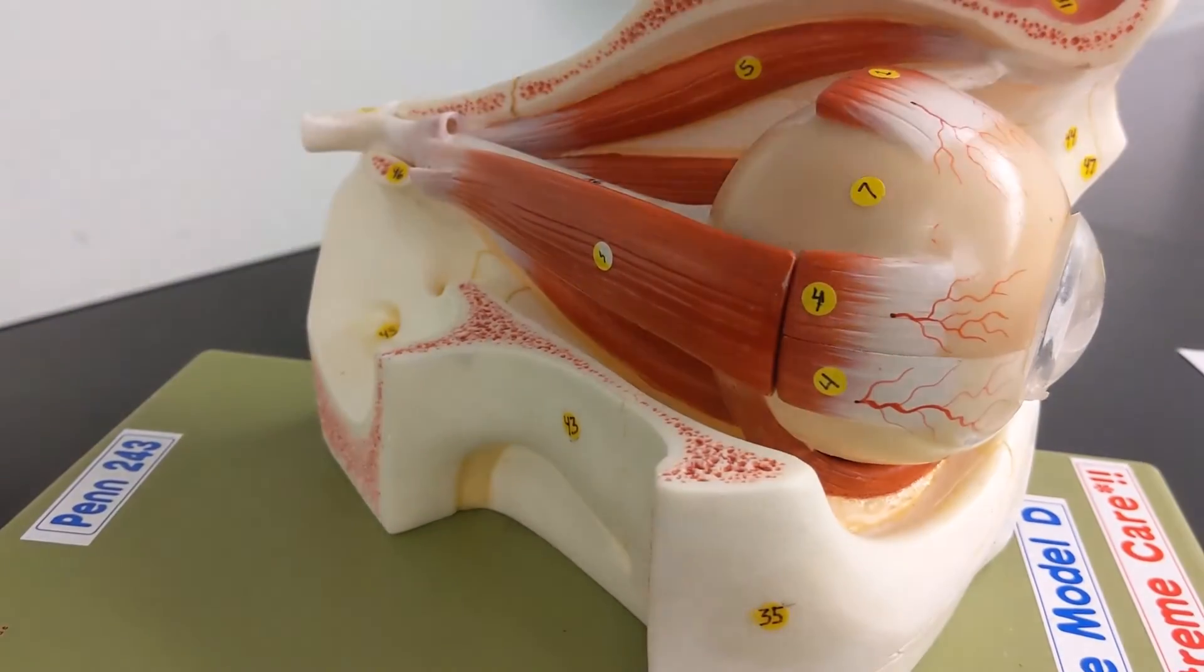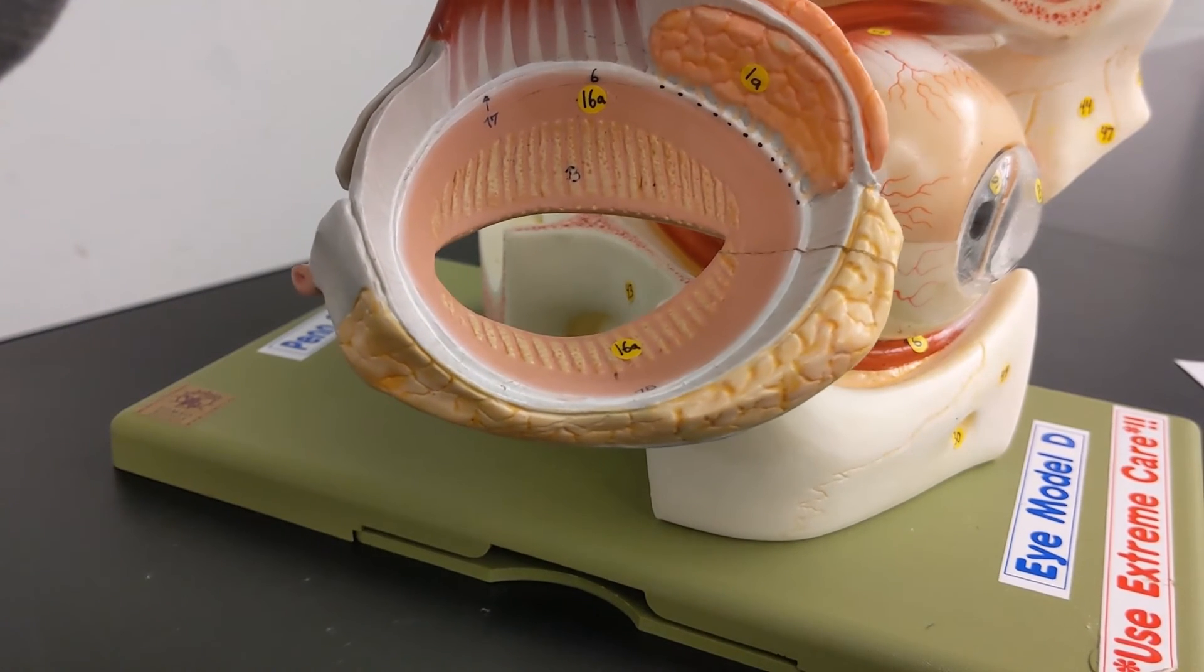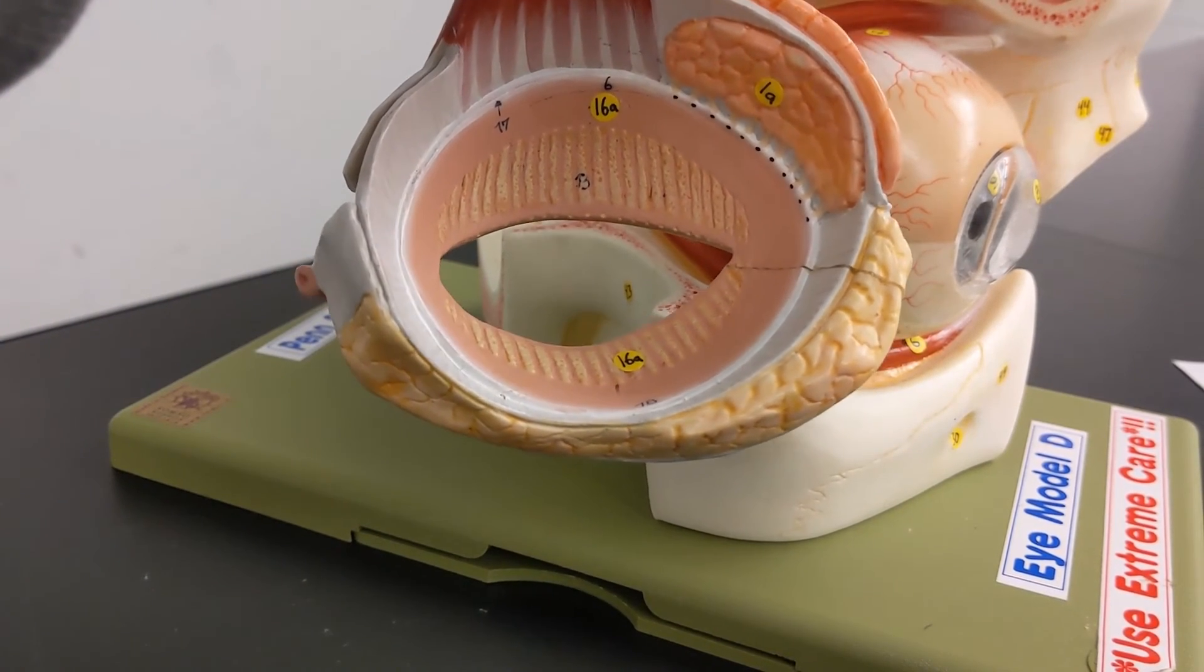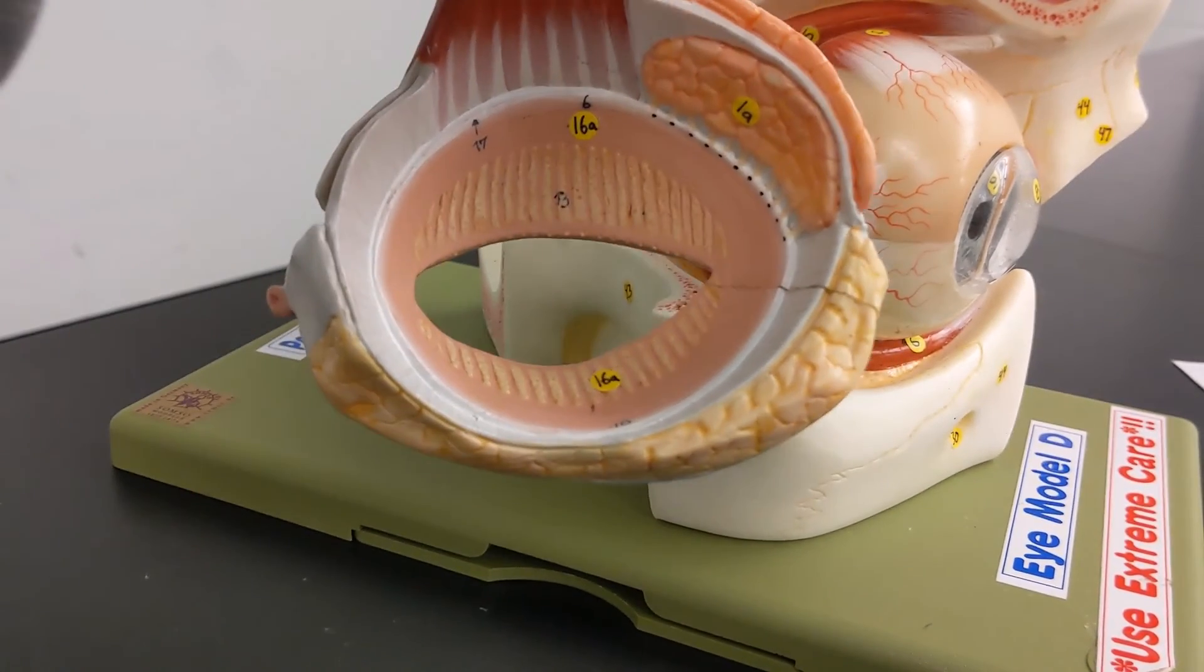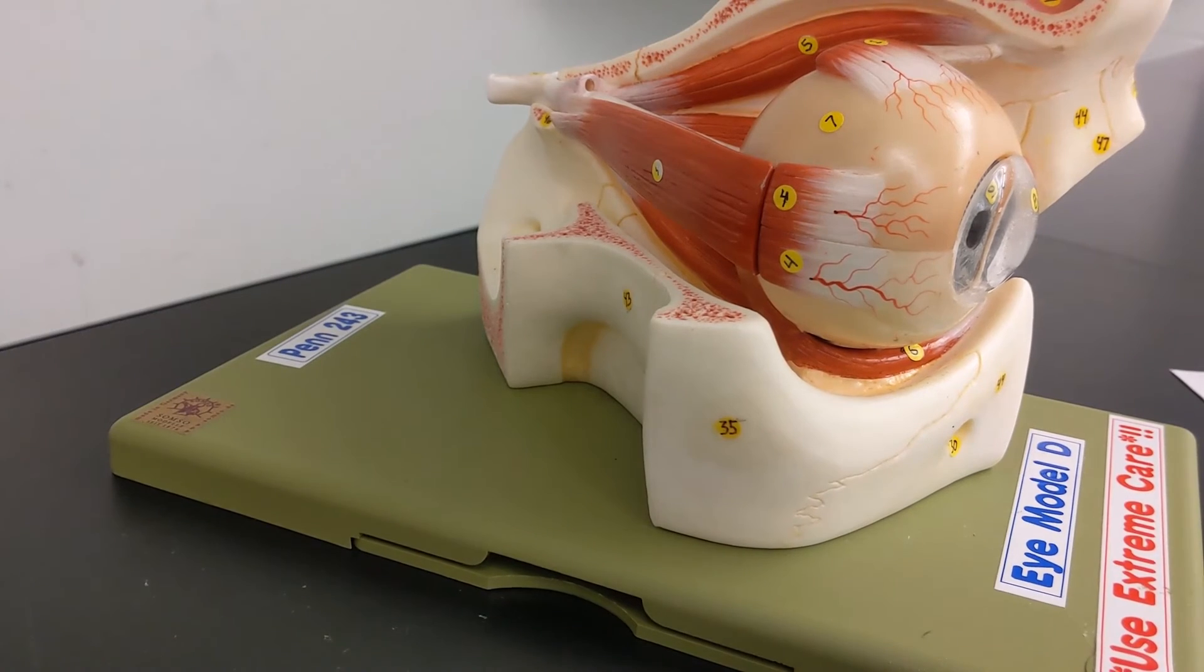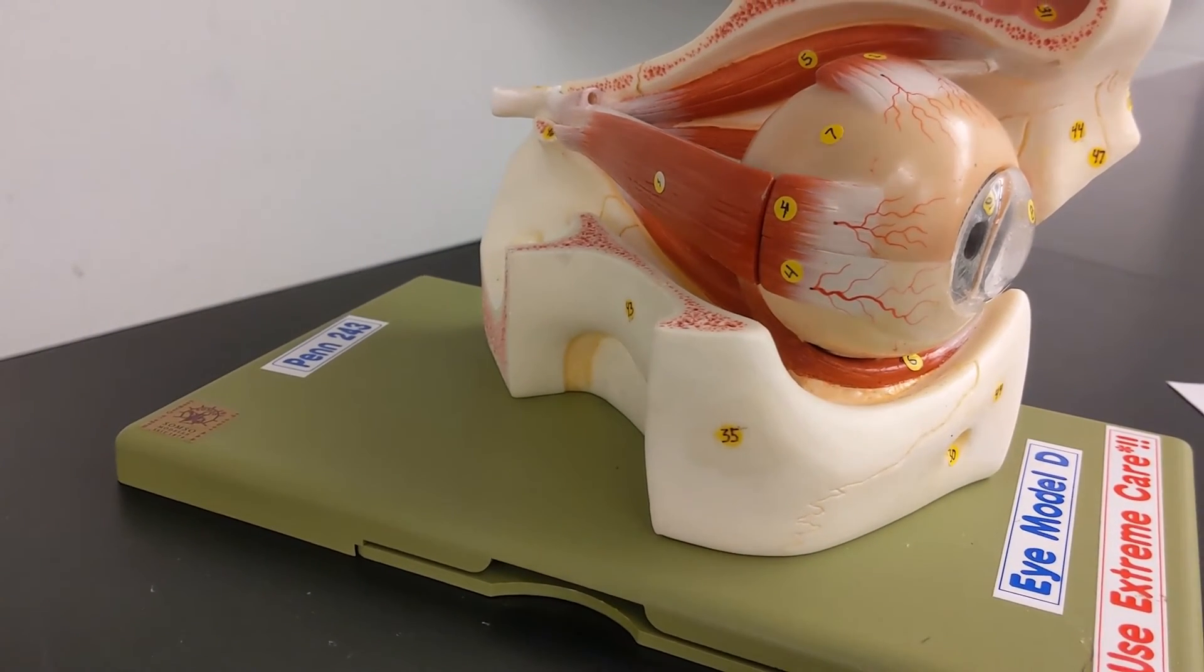Okay, now if we look at the inside, what do we call the inside membrane there? That is the conjunctiva, which is why pinkeye is conjunctivitis. It's inflammation of the conjunctiva.